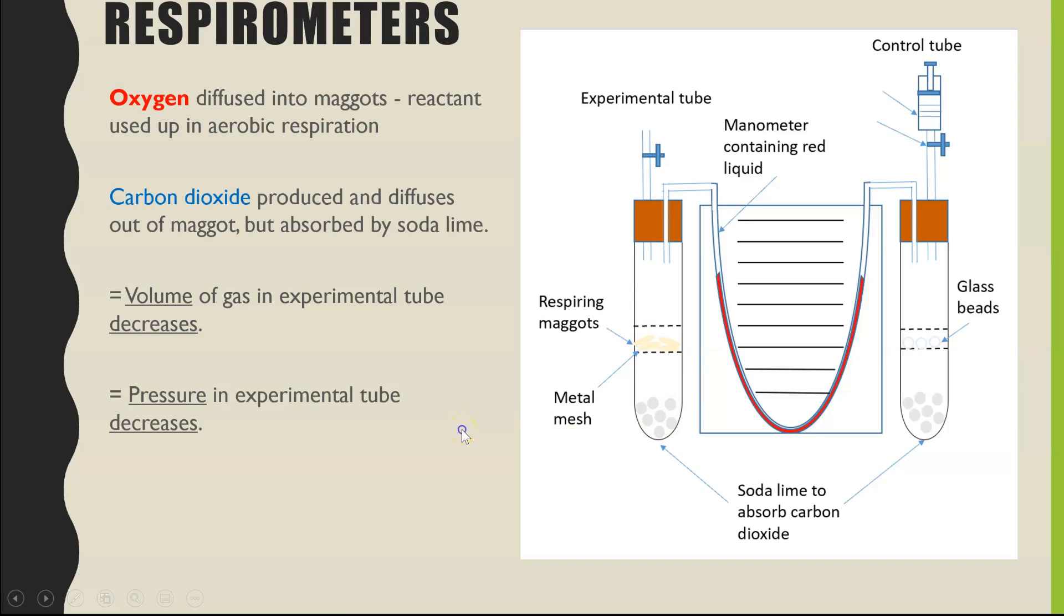So if the volume of gas decreases, that will mean the pressure will drop inside of our experimental tube. Now that won't be happening in the control tube because the glass beads aren't taking in any oxygen. So comparatively, the glass beads, the control tube here, will have a higher pressure compared to the experimental tube. And because the pressure is comparatively high in the control tube, that will then force the air around and the liquid inside of the manometer tube, and therefore the liquid will start to move towards the experimental tube.